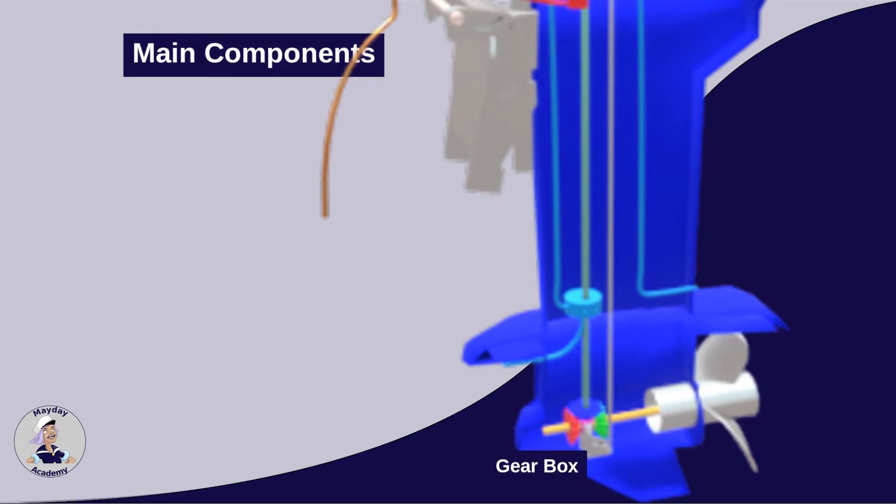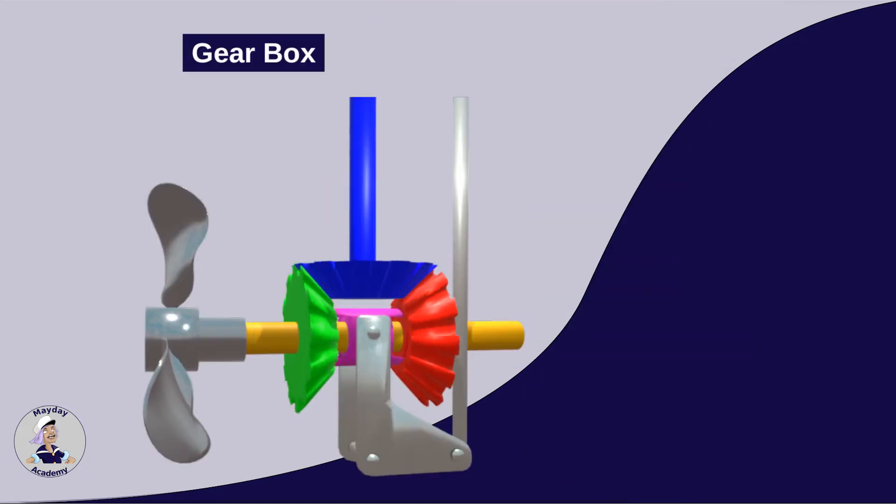The gearbox allows for the change of rotational direction and speed, thereby controlling the forward and backward movement of the boat. In the neutral position, the connection between the engine and the propeller is interrupted, so no movement occurs. In the animation, we see a schematic representation of the gearbox of an outboard motor.